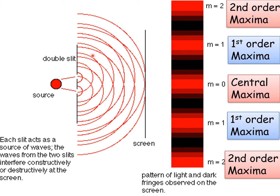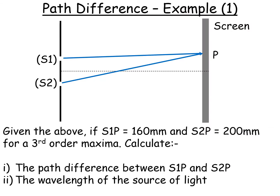Looking at the diagram: the central maxima is always the brightest. Then we get the first order maximum — the next brightest — because we're now missing one wavelength. The second order maxima: missing two wavelengths. It's a symmetrical diagram, so the same thing happens below m0. These are also called the first order maxima and second order maxima, and you need to know the names of these maxima from the diagram.